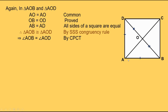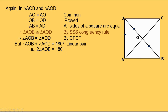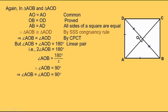But angle AOB plus angle AOD equals 180 degrees (linear pair). That is, twice angle AOB equals 180 degrees since angle AOB equals angle AOD. So angle AOB equals 180 degrees divided by 2. Therefore, angle AOB equals 90 degrees. This implies angle AOB equals angle AOD equals 90 degrees. Thus, AO is perpendicular to BD, that is AC is perpendicular to BD. Thus, diagonals of a square are equal and bisect each other at right angles.